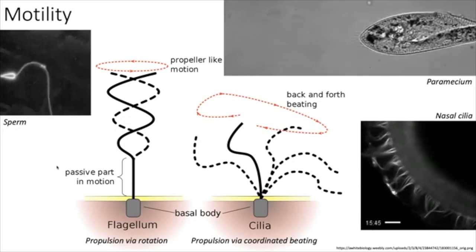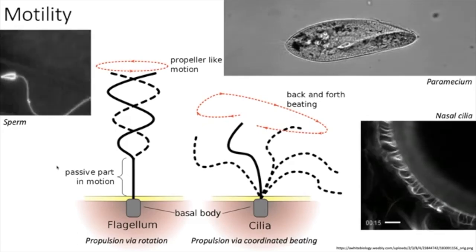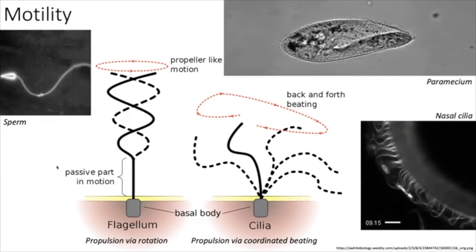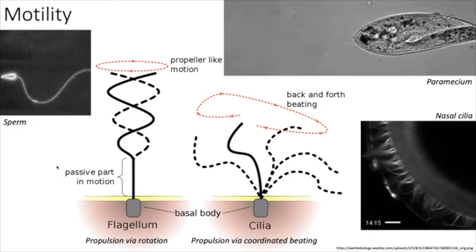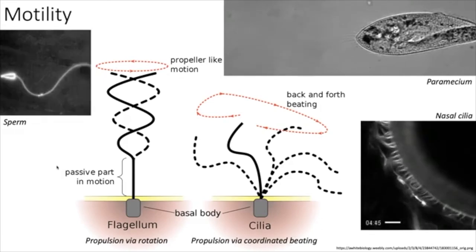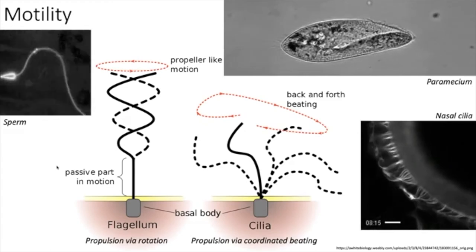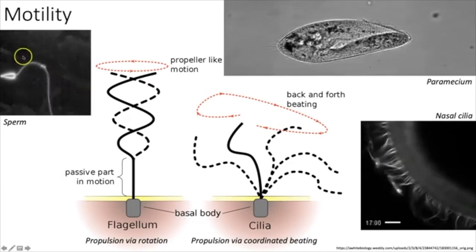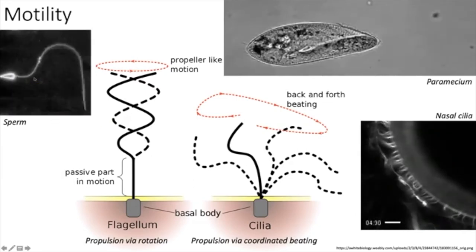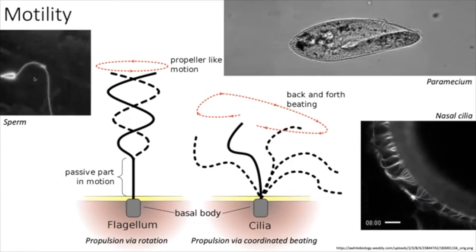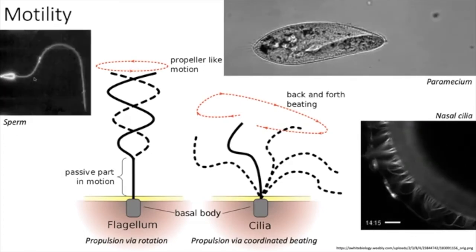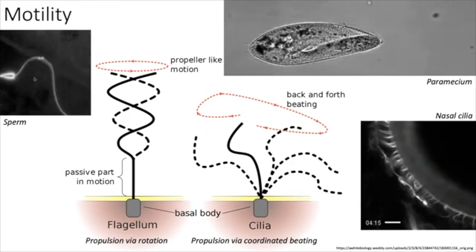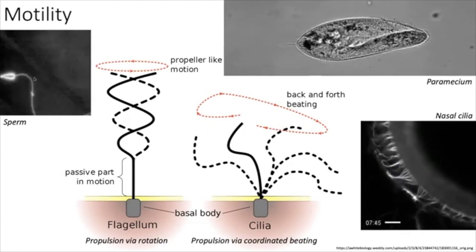Different organisms use different sterols: mammals have cholesterol, plants have phytosterols, and fungi have ergosterols. The phospholipid bilayer connects to everything inside and outside the cell — it's a scaffold for embedding proteins that connect to the cytoskeleton and the extracellular matrix, enabling communication and movement. Key functions include selective permeability, acting as a protein anchor, and maintaining gradients for processes like ATP synthesis.